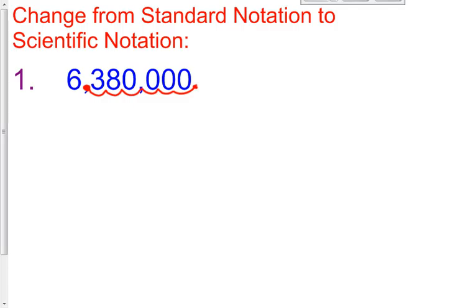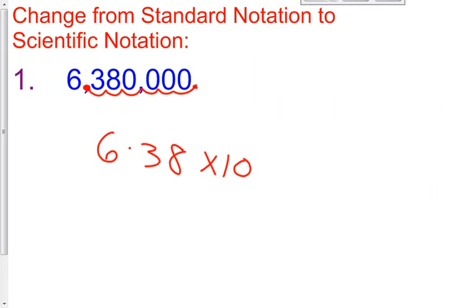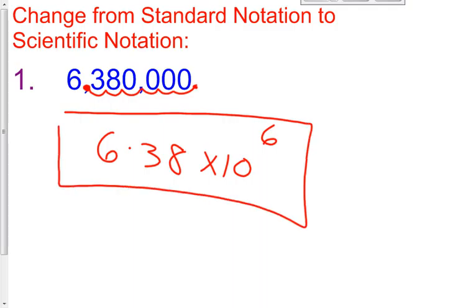So if I were to write this in scientific notation, it would be 6.38 — I don't have to write the rest of the zeros — times 10 raised to the 6th. I moved it 6 times to the left, and as stated, if you move to the left, the exponent is positive. So 6,380,000 in standard notation turns into 6.38 times 10 to the sixth.